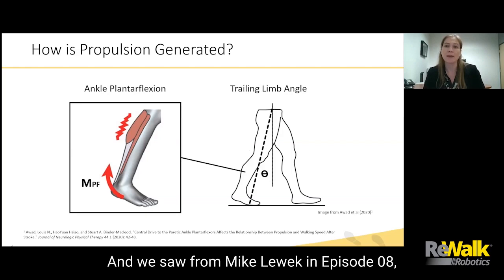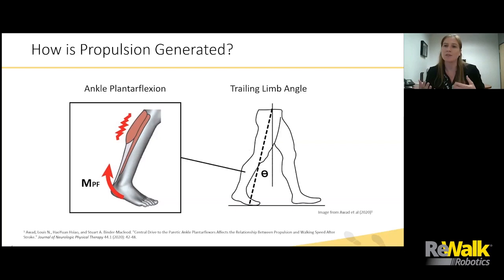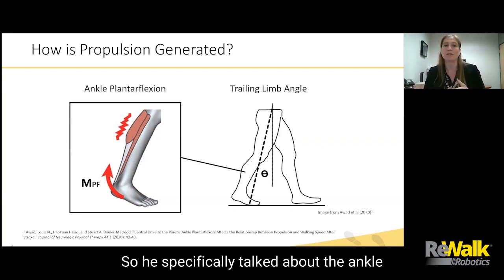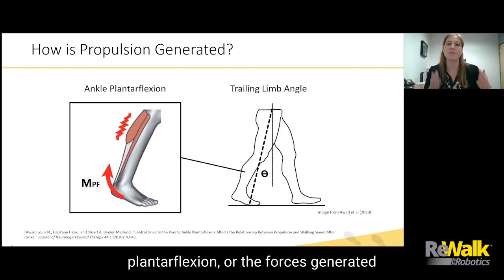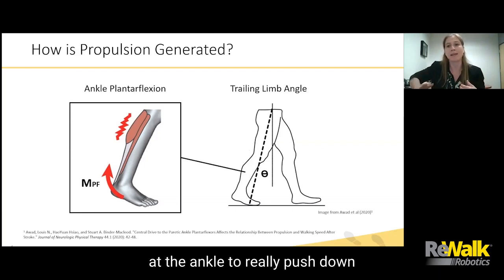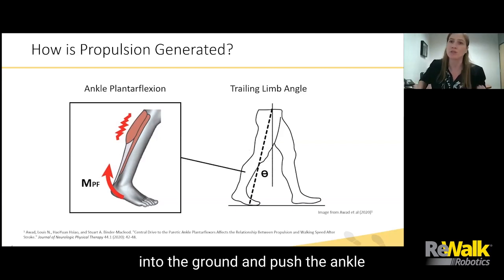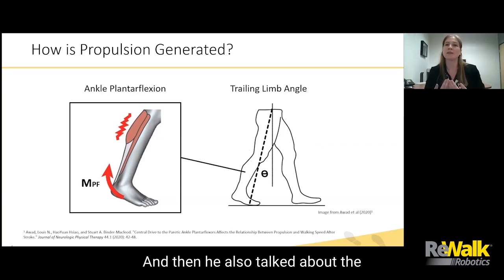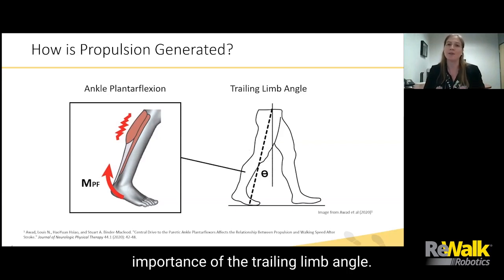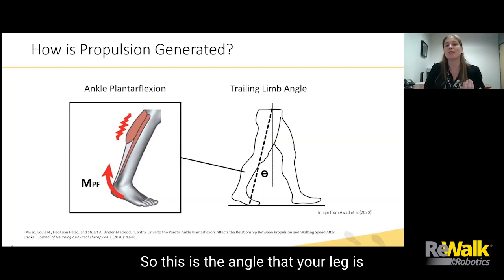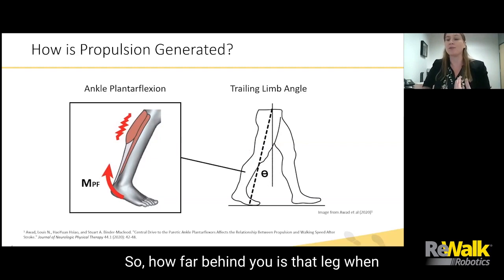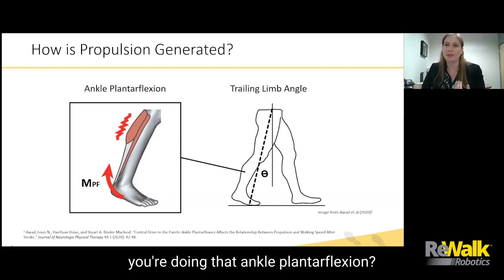We saw from Mike Lewick in episode eight — he did a really nice job of breaking down the two subcomponents of propulsion. He specifically talked about the ankle plantar flexion, or the forces generated at the ankle to push down into the ground and drive the body forward. And then he also talked about the importance of the trailing limb angle — the angle that your leg is basically behind your body's center of mass, and how far behind you that leg is when you're doing that ankle plantar flexion.